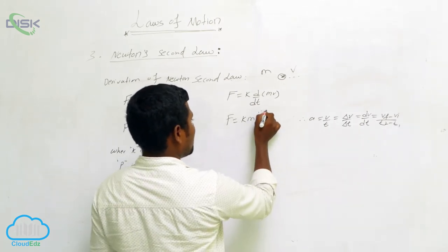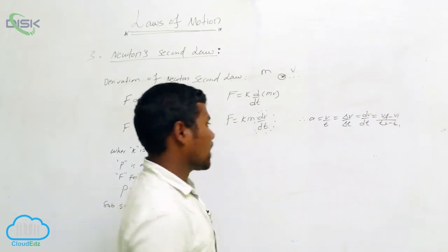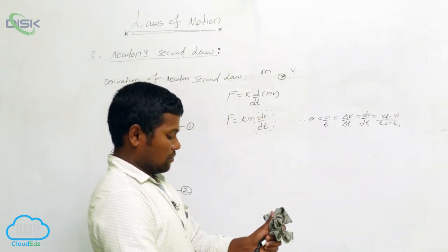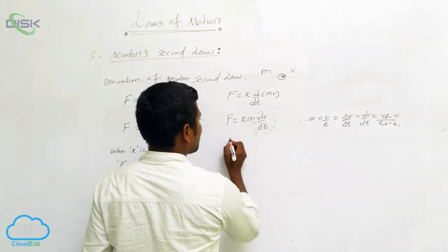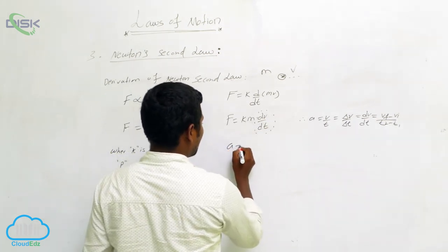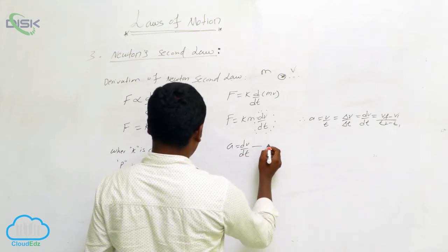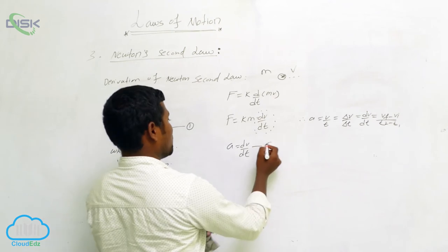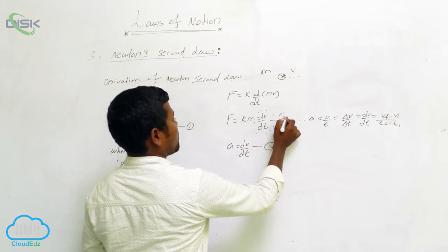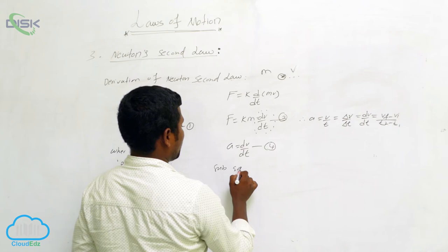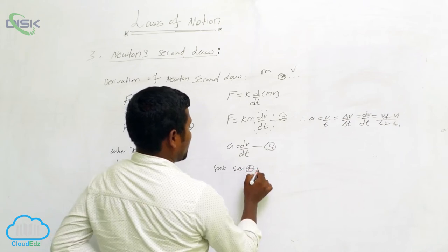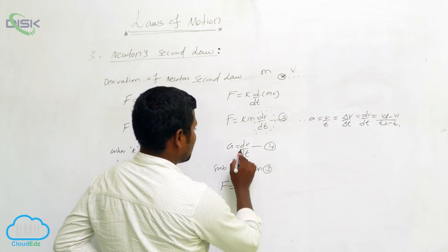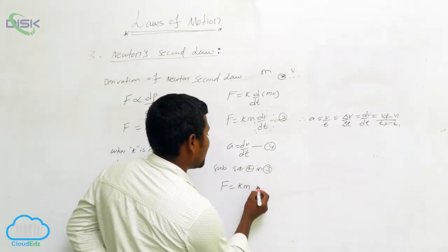So dv/dt means the change in velocity with respect to time. We can write a equals dv/dt as equation number three. Substituting equation three into our previous equation, F equals k·m·a, where in place of dv/dt we write a.